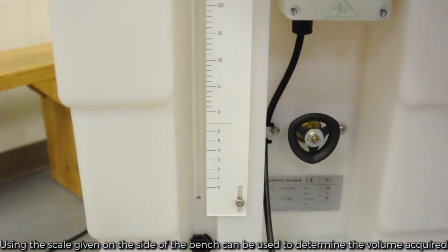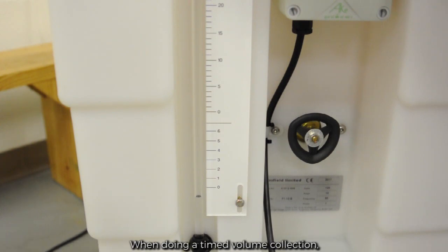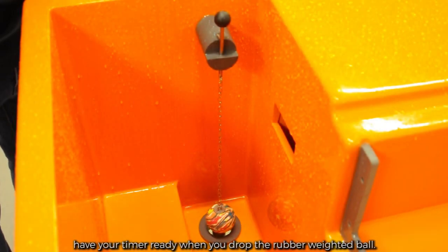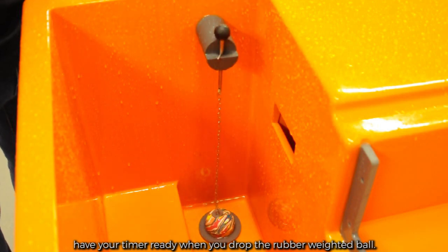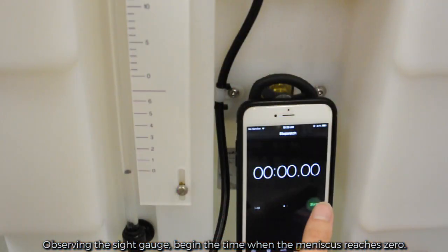Using the scale given on the side of the bench, this can be used to determine the volume acquired. When doing a time volume collection, have your timer ready when you drop the rubber weighted ball. Observing the sight gauge, begin the time when the meniscus reaches zero.